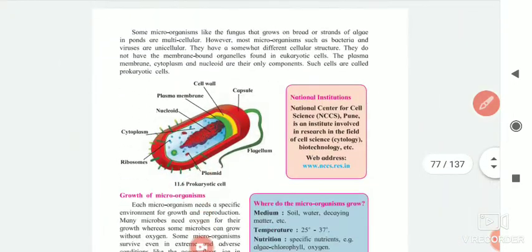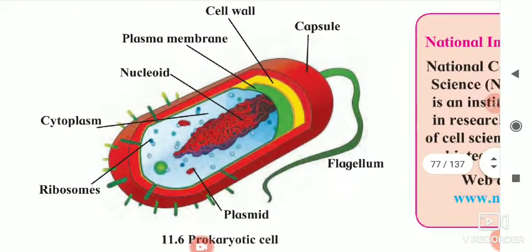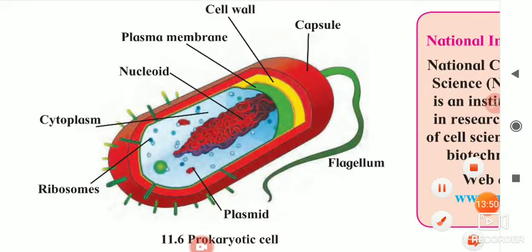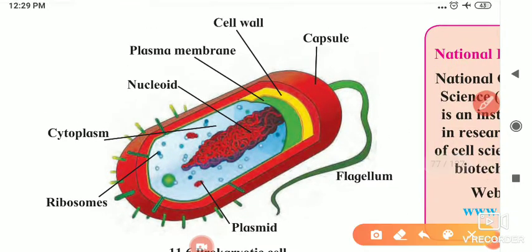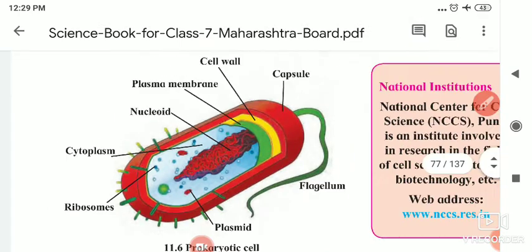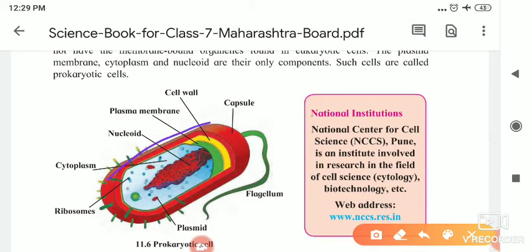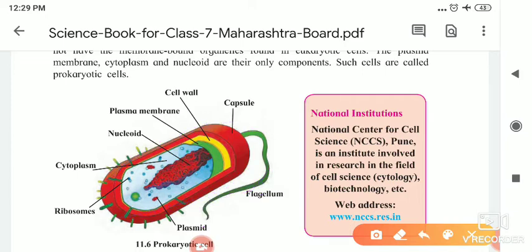Here is the shape of the prokaryotic cell given — this figure is important and you have to do the practice of this cell. The prokaryotic cell has a capsule on the outer surface shown in red color. It has a flagella — that tail-like structure. There is a yellow-colored cell wall, below which the plasma membrane is there. This is the nucleoid, then cytoplasm, and inside there are ribosomes and plasmids. This is the structure of the prokaryotic cell.